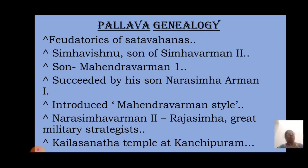In the genealogical flow: first Simhavishnu, son of Simhavarman II; then his son Mahendravarman; then comes Narasimhavarman I; then Narasimhavarman II, also known as Rajasimha; and Nandivarman II. The last Pallava ruler was Aparajita.